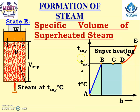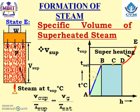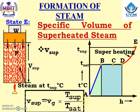Specific volume of superheated steam V_sup can be calculated using: V/T at state E = V/T at state D. So V_sup / T_sup = VG / T_sat, which gives V_sup = VG × (T_sup / T_sat). Kindly note that here temperature must be in Kelvin.